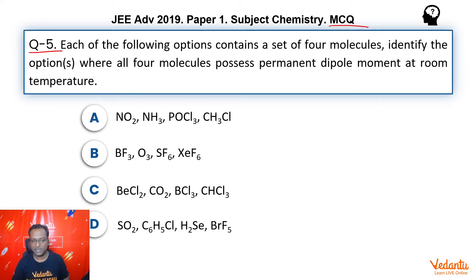Now this is a multiple correct type question. It says, which of the following options contains a set of four molecules where all the four molecules possess permanent dipole? All the four have to possess permanent dipole.